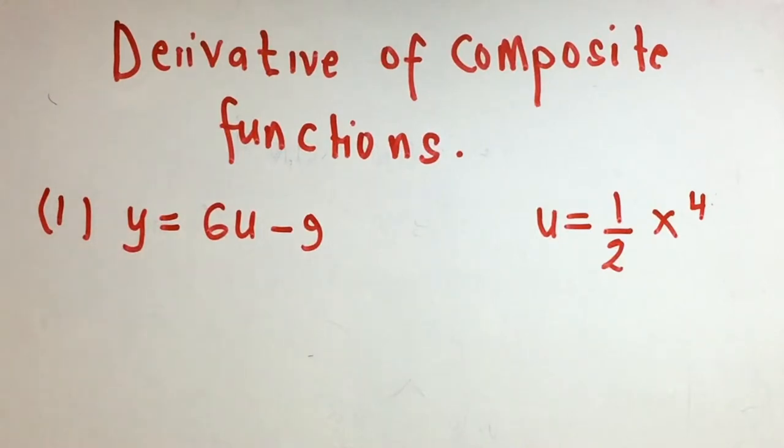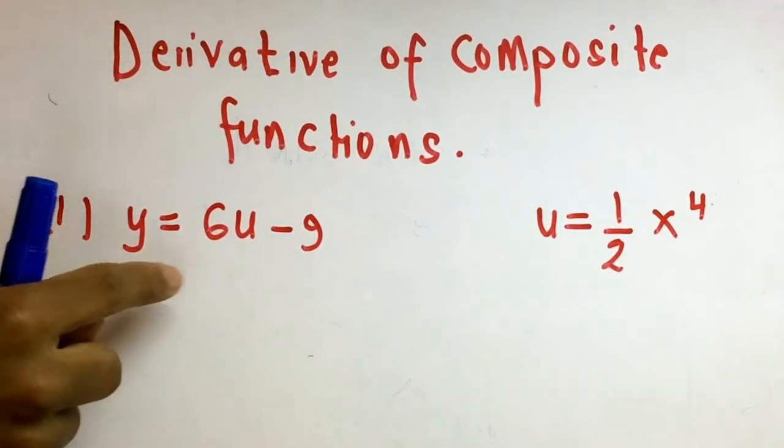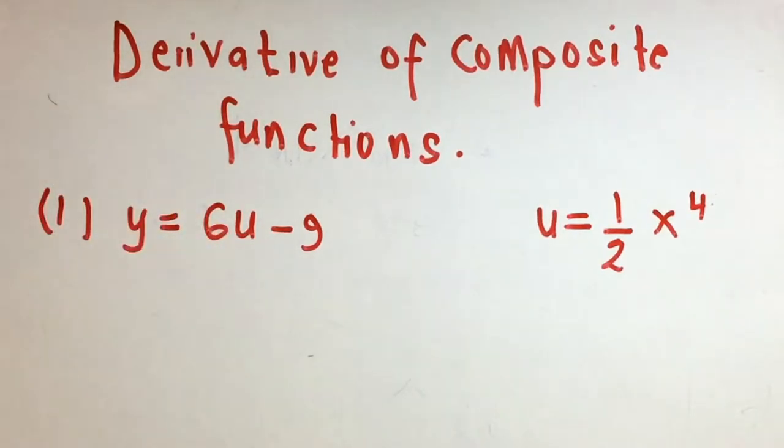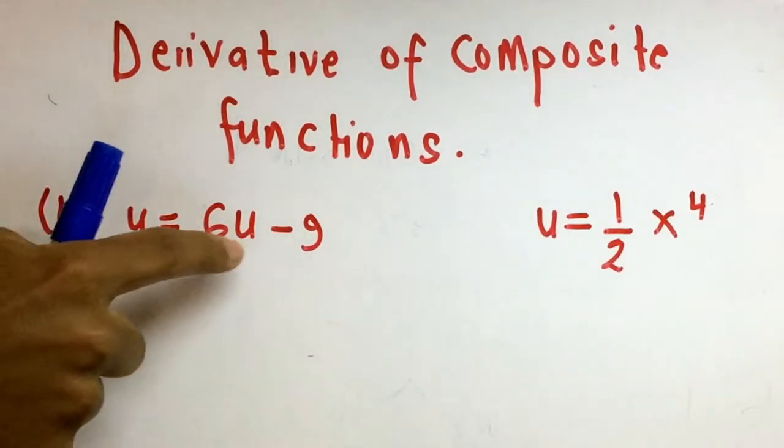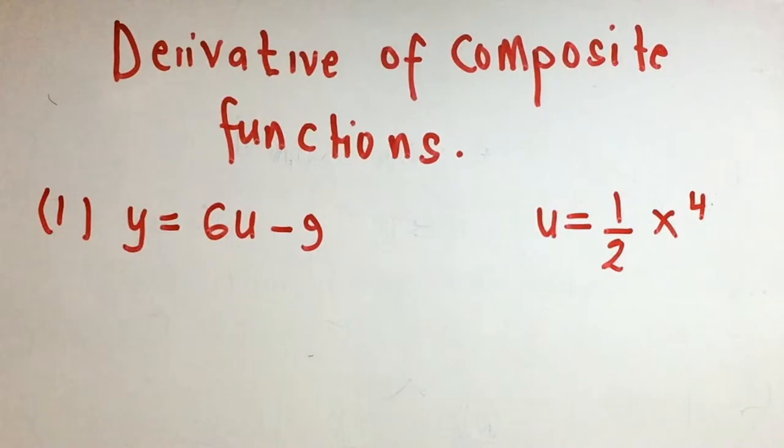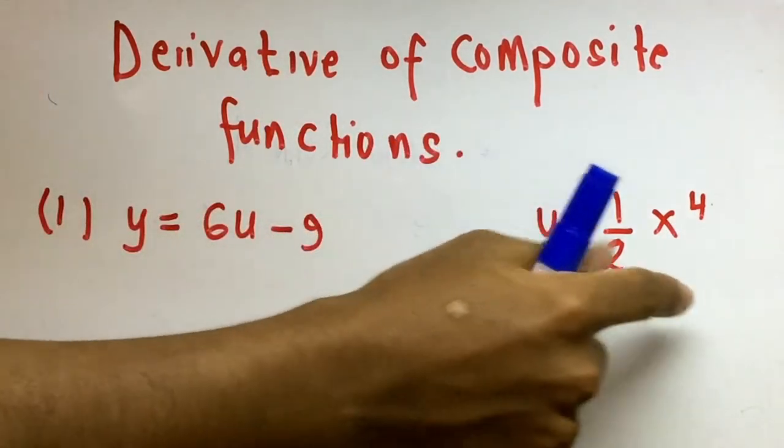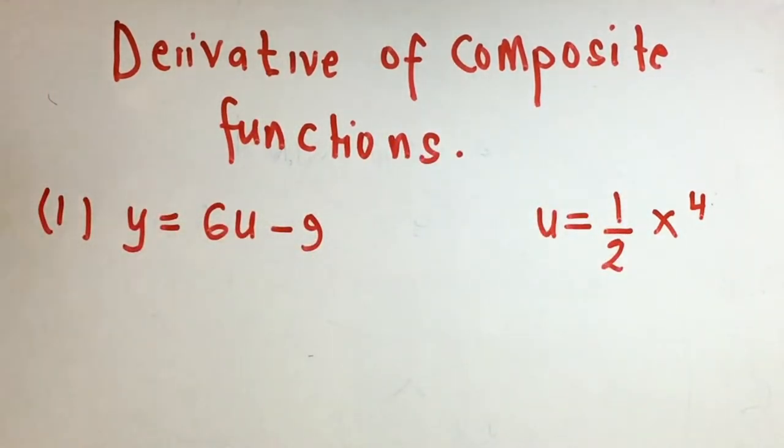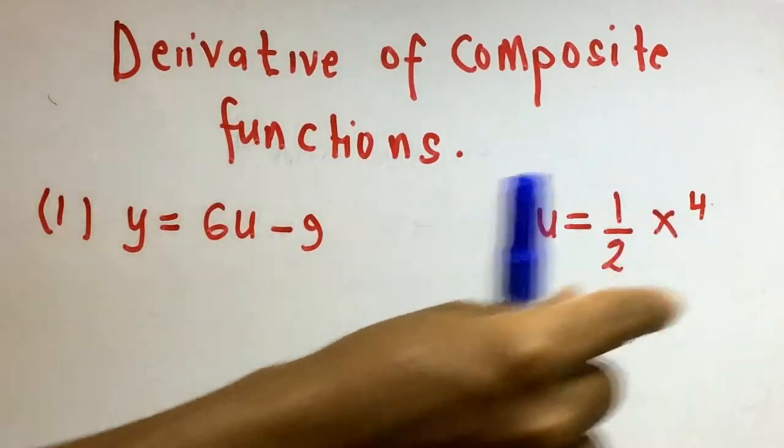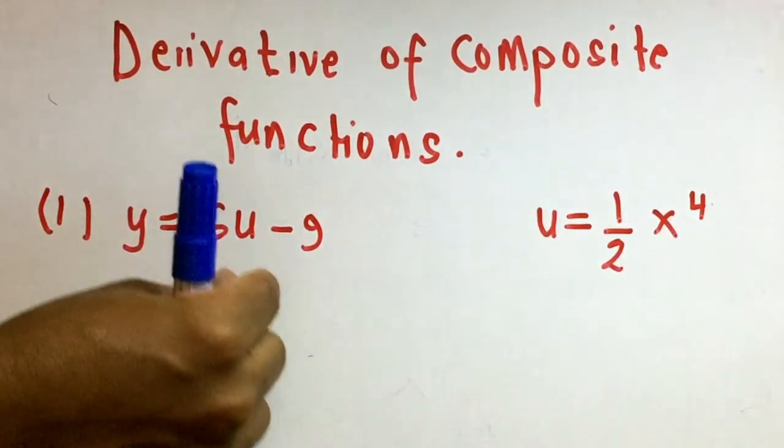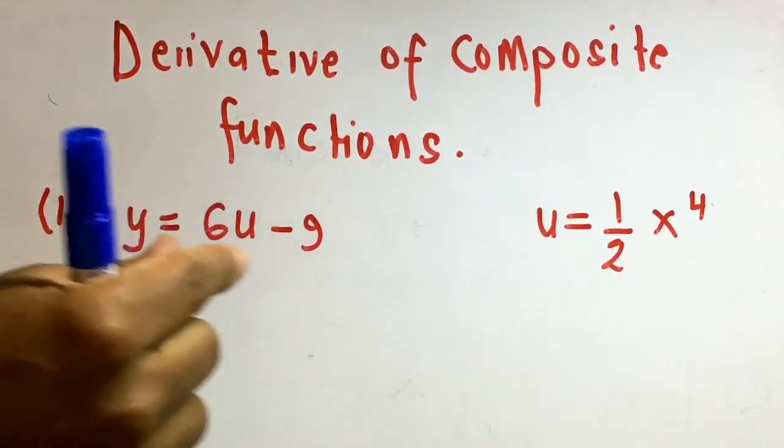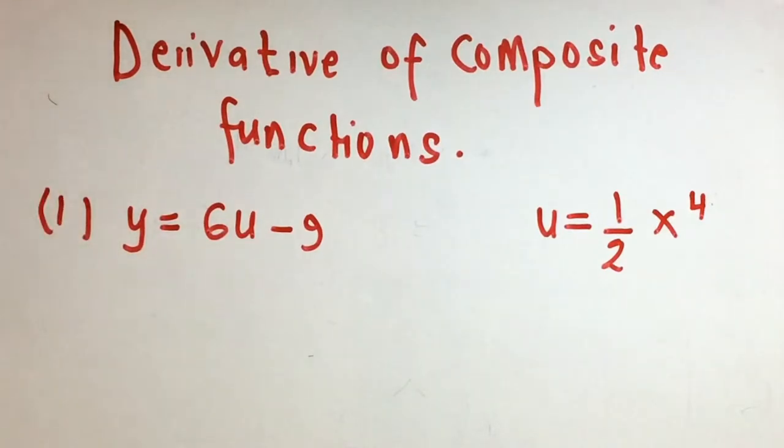Let's look at a composite function where y equals 6u minus 9, and u equals one-half x to the power of 4. We have a function y, which is a function of u, and u is a function of x. So y is a function of a function.